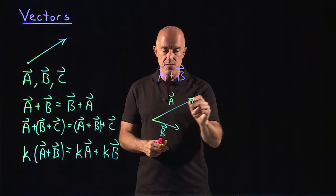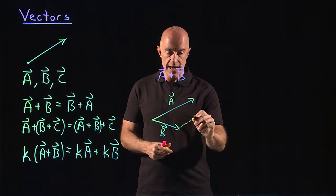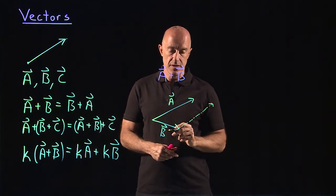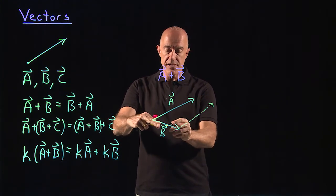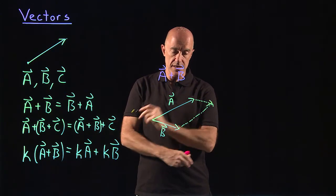So if we move this a vector down here, we would get the a vector would look like this. Or if we move this b vector over here, the b vector would look like this.